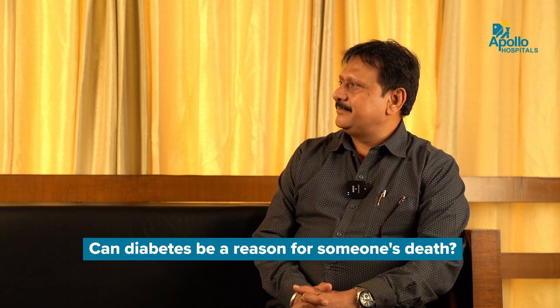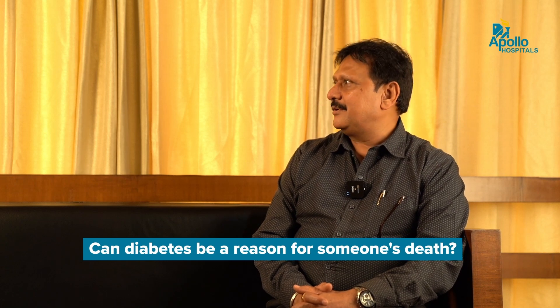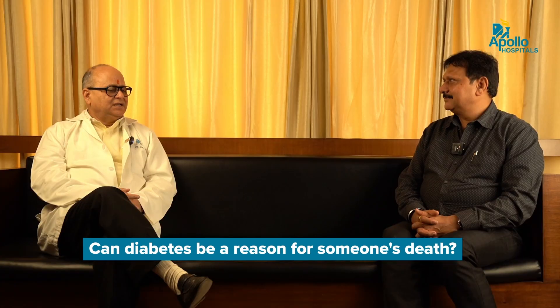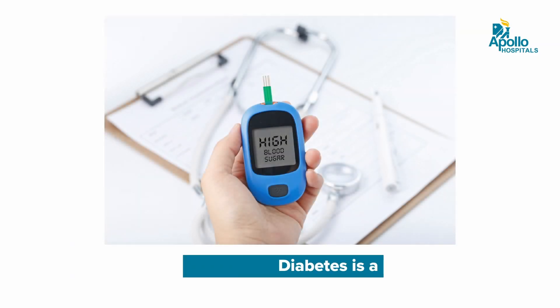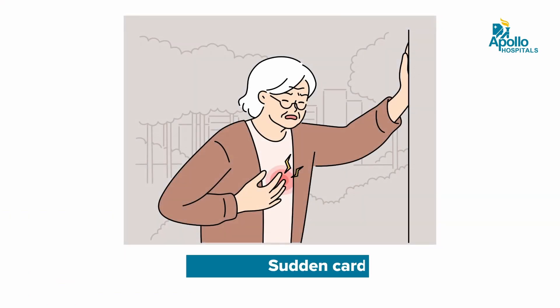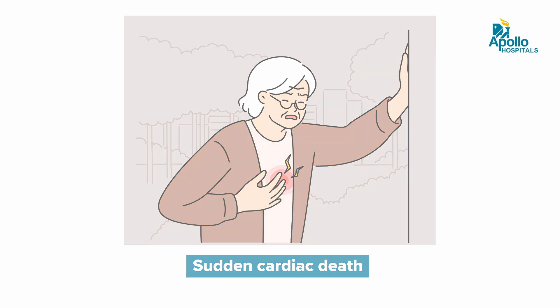So let's discuss something about diabetes. Doctor, can diabetes be a reason for someone's death? Diabetes is dubbed as a silent killer. Sometimes we hear the news that a diabetic patient during the night suddenly died. We call it sudden cardiac death.